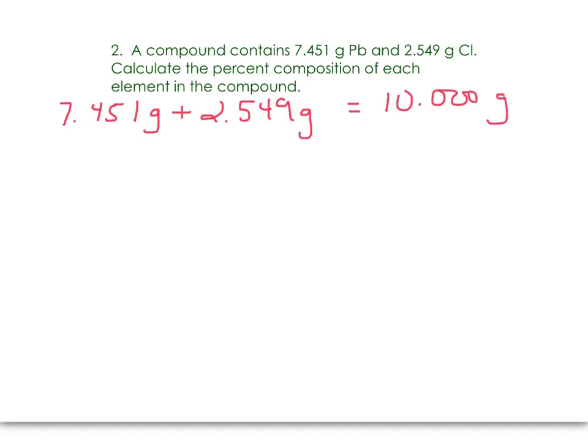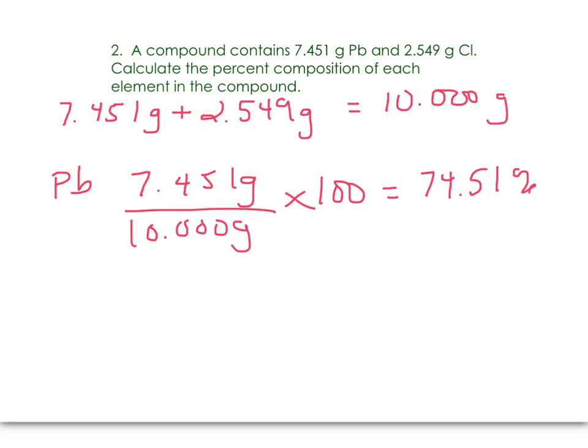So now we can look at each element, say the lead, its mass in the numerator, the total mass of the compound in the denominator times 100 to make it a percent. That's 74.51% lead. And then the chlorine, you can calculate the same way, or you can take 100% minus 74.51, and that gives you 25.49% chlorine.